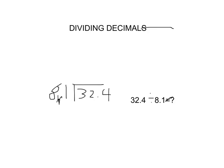So 81, and then for this 32.4 you have to move the decimal point one place to the right, so it will just be 324. How many times does 81 go into 324? 4 times, so we got our answer.